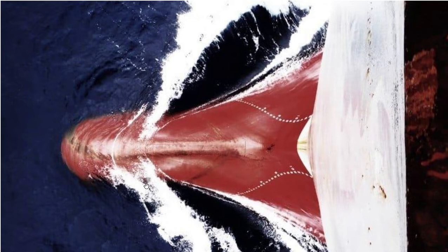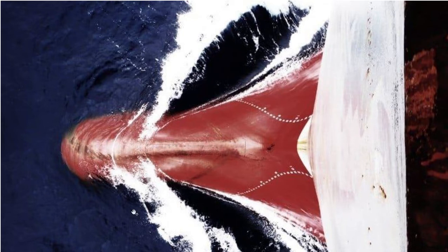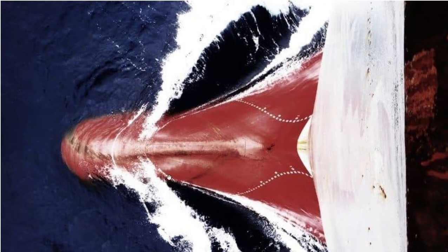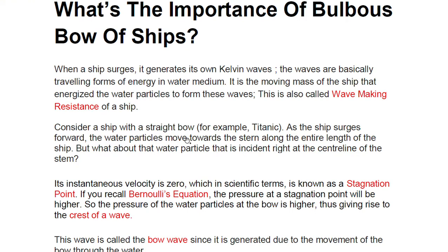You must have seen the protruding portion at the forward part of a vessel. It's a very important feature. In older days — if you recall the Titanic — this was not present. With developments in ship construction it came into picture. We are going to discuss what a bulbous bow is, its significance, different types, and internal construction. Panting and pounding arrangements will be covered in a separate video.